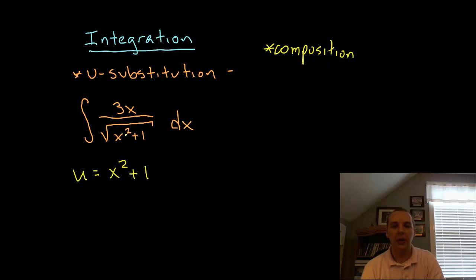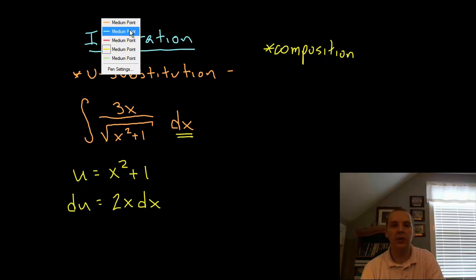This is u. If I want to change this integral to be written in terms of u, then I also need a du instead of a dx. So du would be the derivative of x squared, which is 2x, followed by a dx, right.